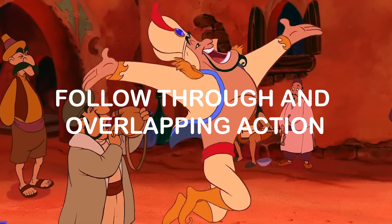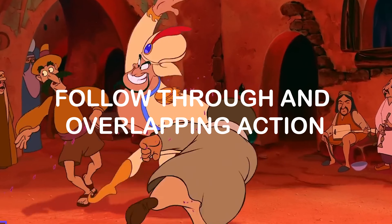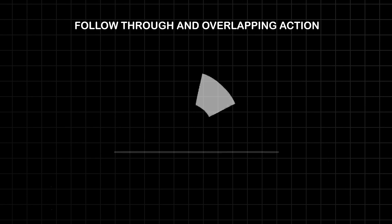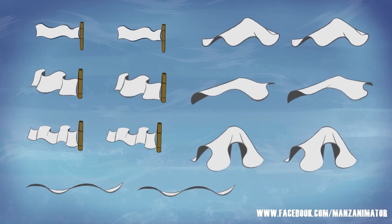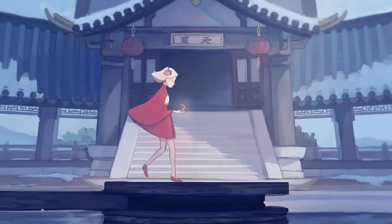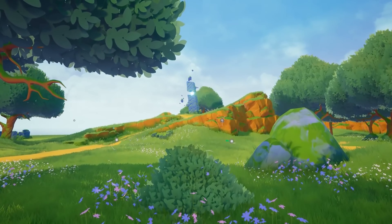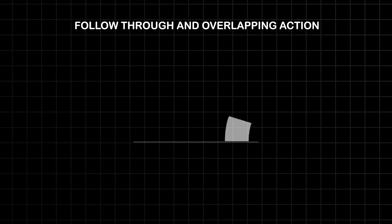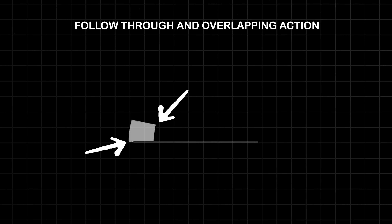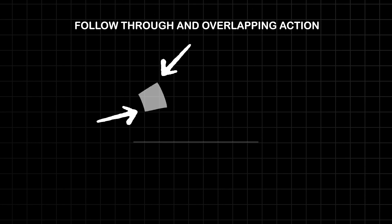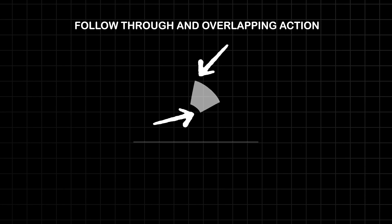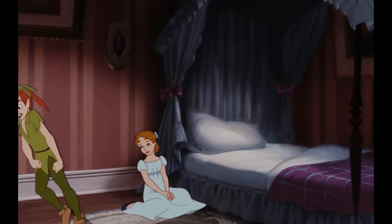Follow-through and overlapping action simulate the laws of physics by depicting secondary movements that occur after the primary action has ceased. From the flutter of clothing in the wake of a character's movement to the subtle swaying of foliage in the breeze, these principles imbue animation with realism and depth, enriching the viewer's immersion in the animated world.